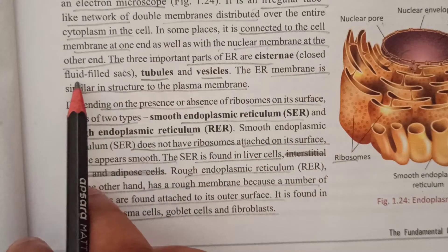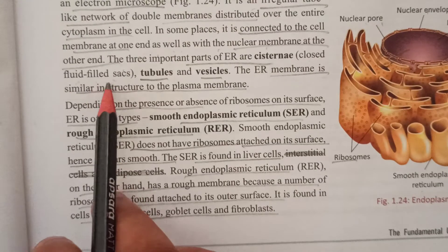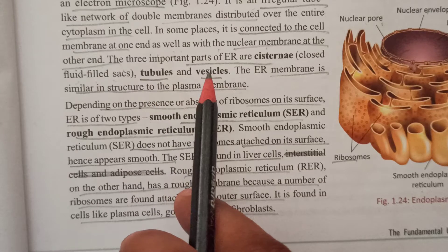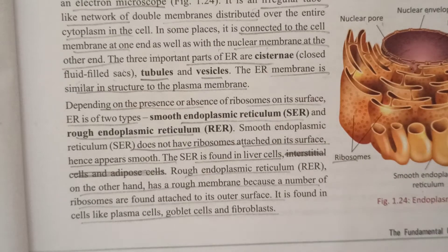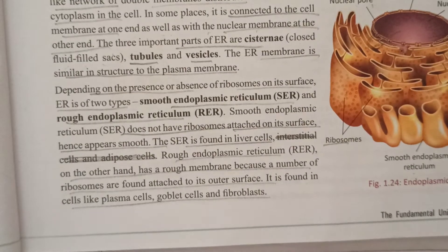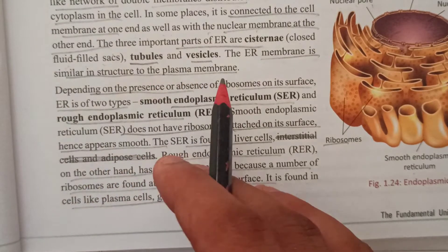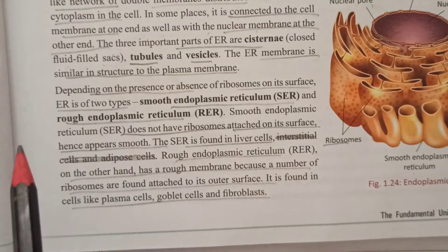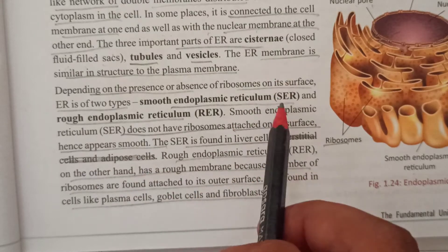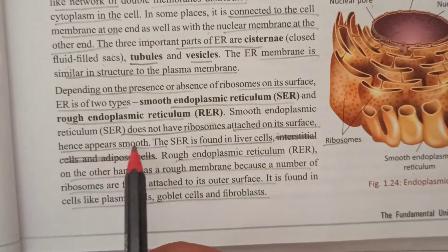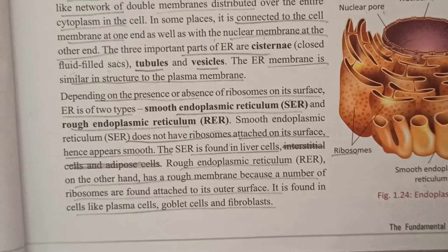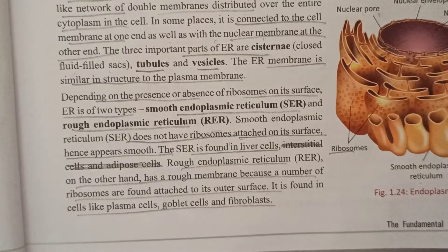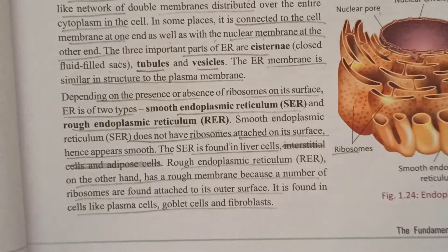There are three parts of the endoplasmic reticulum: first, fluid-filled sacs; next, tubules; and vesicles. The ER membrane is similar in structure to the plasma membrane. Depending upon the presence or absence of ribosomes, there are two types: SER (smooth endoplasmic reticulum) does not have ribosomes, while RER (rough endoplasmic reticulum) does, and is found in plasma cells, goblet cells, and fibroblasts.